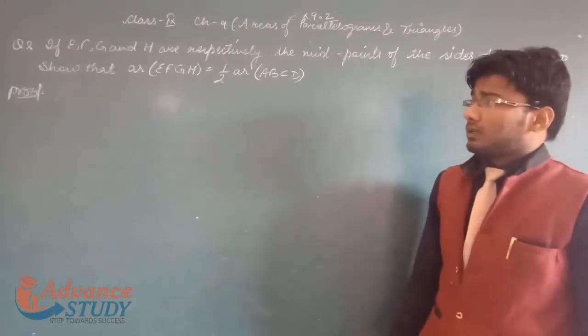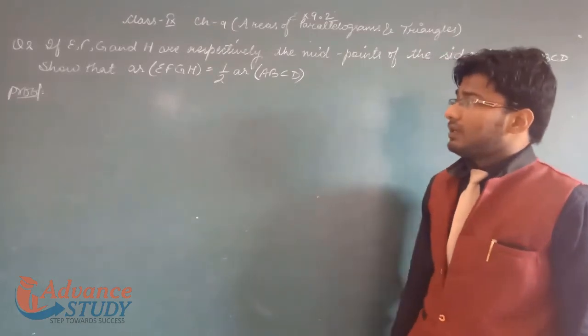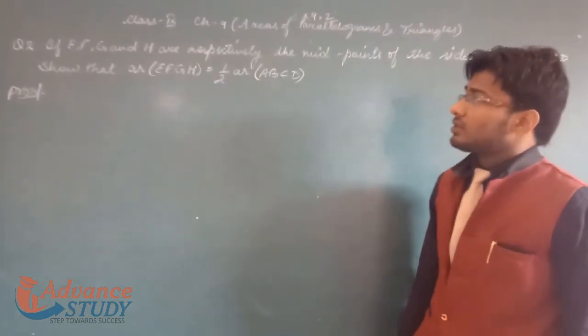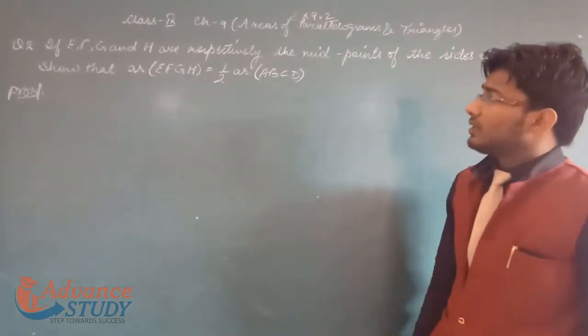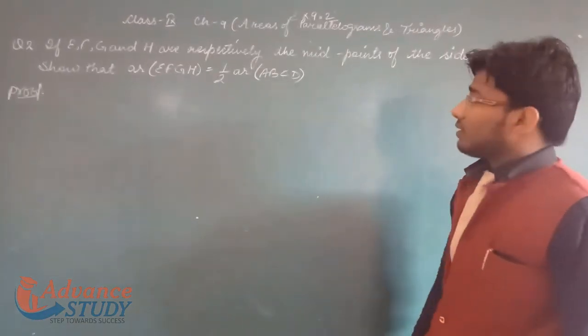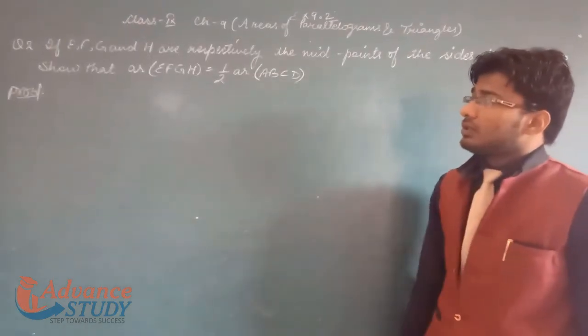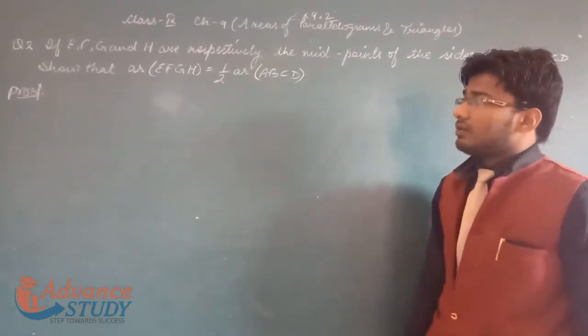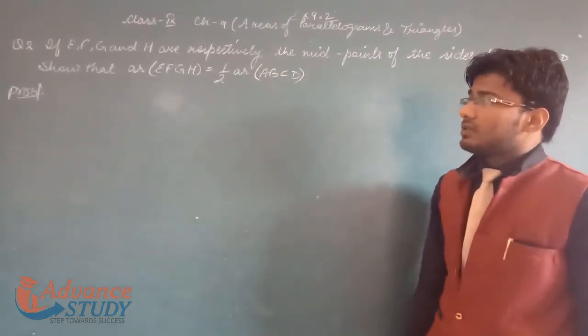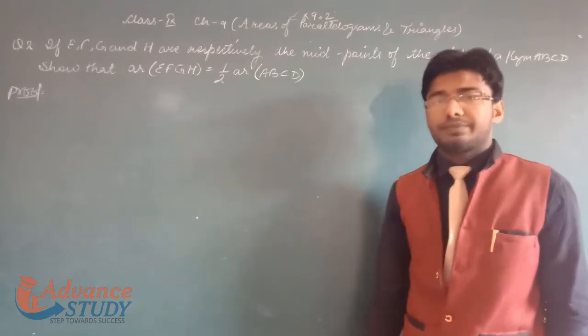Question number 2: If E, F, G, and H are respectively the midpoints of the sides of a parallelogram ABCD, show that area of EFGH is equal to 1/2 area of ABCD.